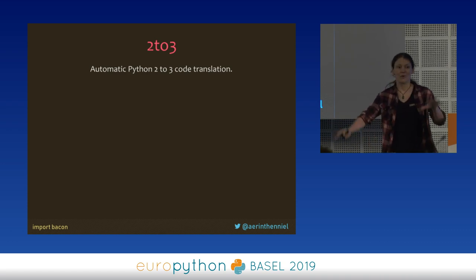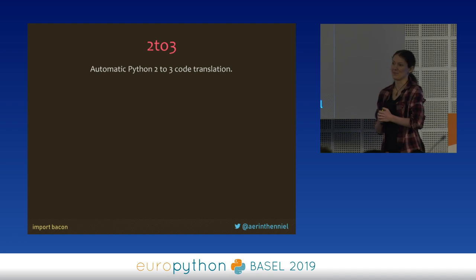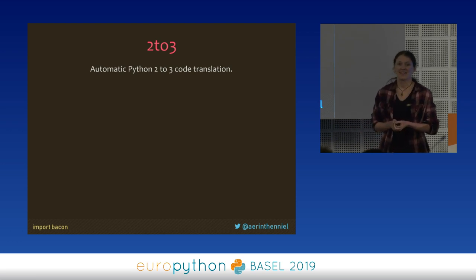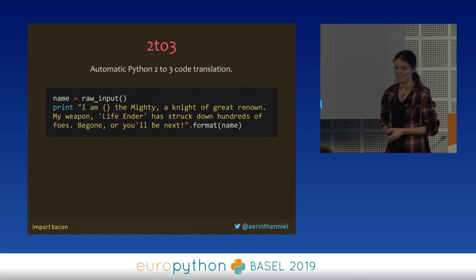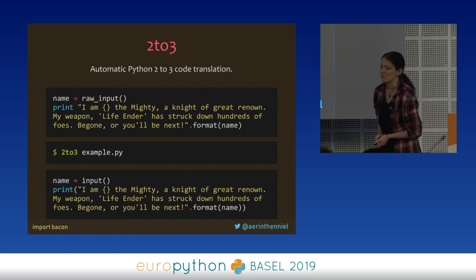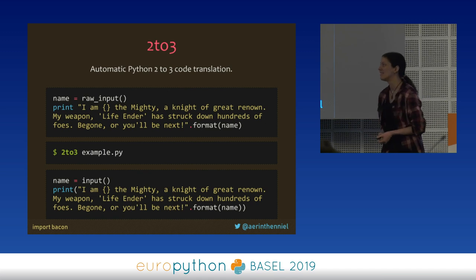Next I want to talk about 2to3. Nobody in this room uses Python 2 anymore, right? But in the very remote case that this would actually be the case, there is 2to3. Translating Python 2 to Python 3 is a bummer, but there are a lot of things that you can automate away — and that's what 2to3 does for you. It takes away all the tedious translation stuff. You basically give it your file, call 2to3 on it, and it gives you Python 3. Obviously it doesn't magically take care of all your dependencies, but it helps with the annoying stuff.